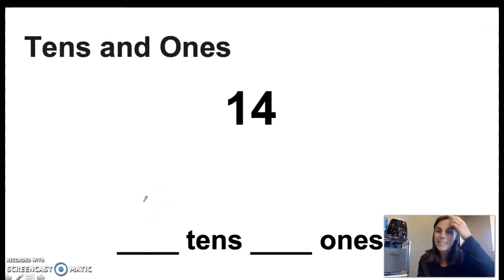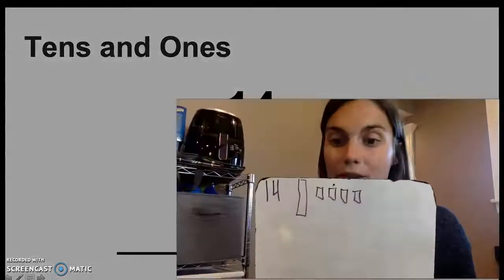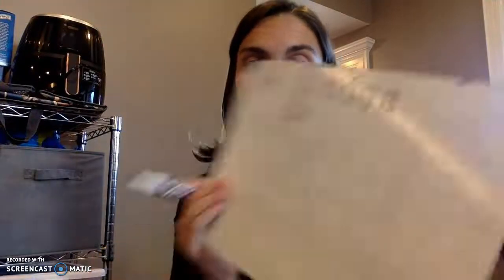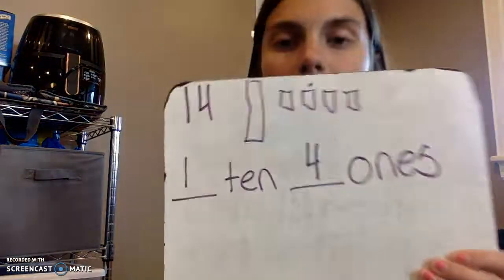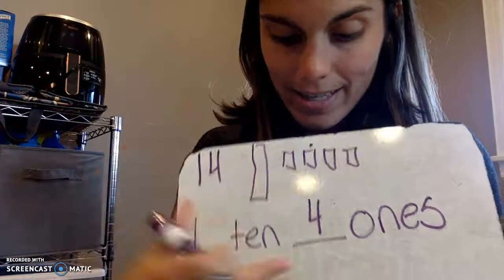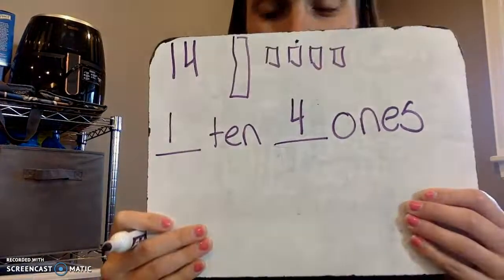Our next step is to break our number into its tens and its ones. So go ahead right now and write down: 14 is blank tens and blank ones. Then we'll share the answers. I know that 14 is 1 ten and 4 ones. That makes the number 14. Nice job.